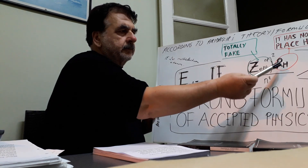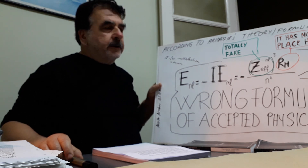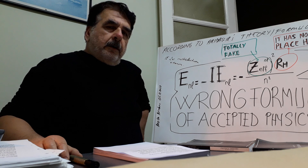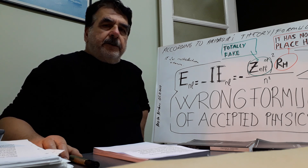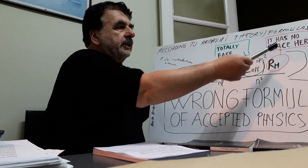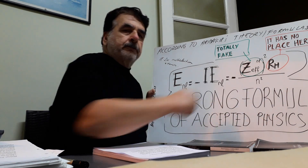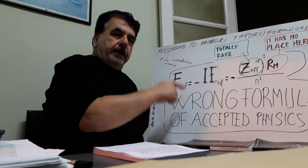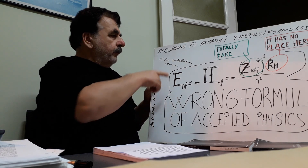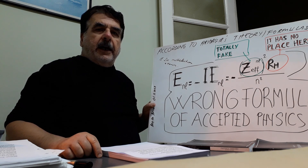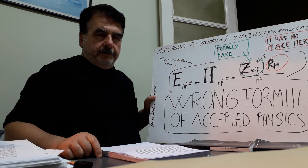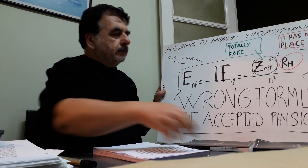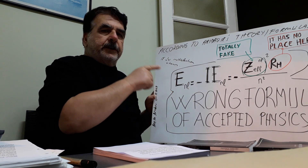Here, the Rydberg constant — the Rydberg constant for hydrogen — equals 2.18 × 10⁻¹⁹ joules. It has no place here. This formula is the formula for multi-electron atom ionization energies, and this formula is wrong.